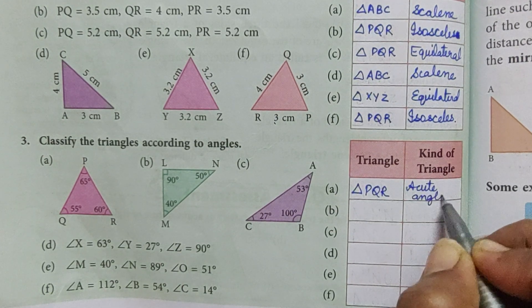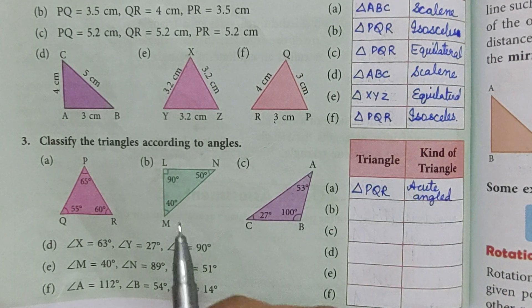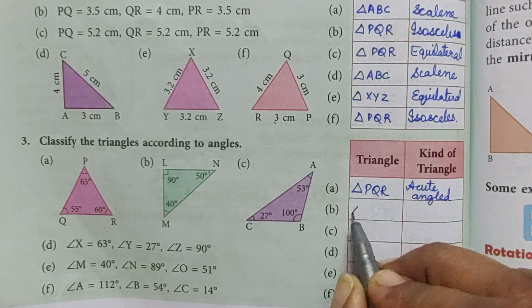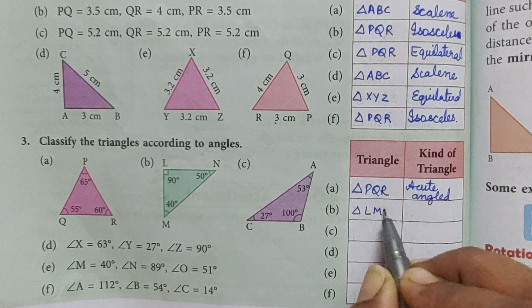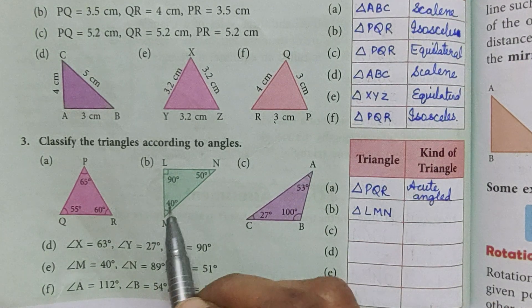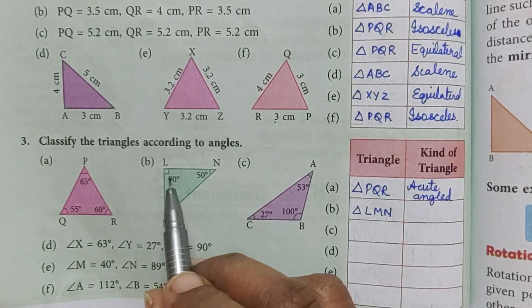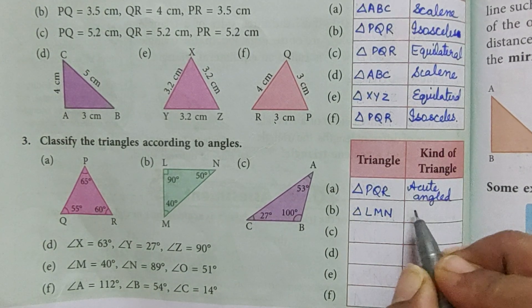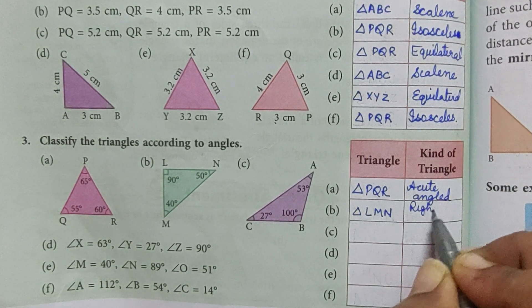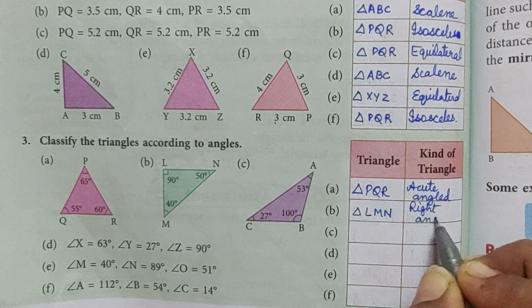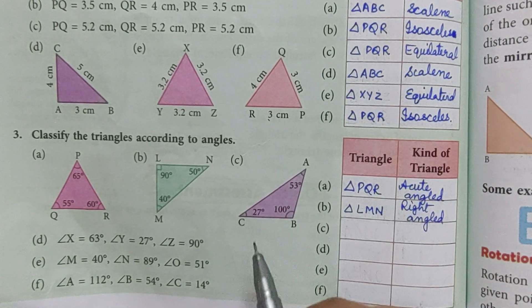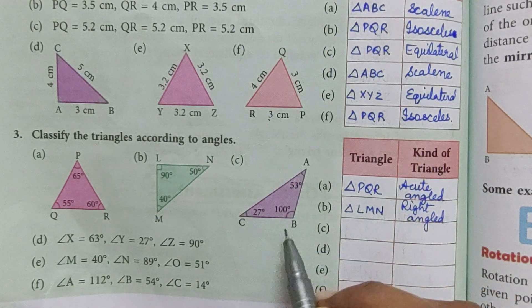Then part B, the name of triangle is triangle LMN. Two angles are acute and one is right angle, so the kind of triangle is right angled. Now third one, the name of triangle is ABC.